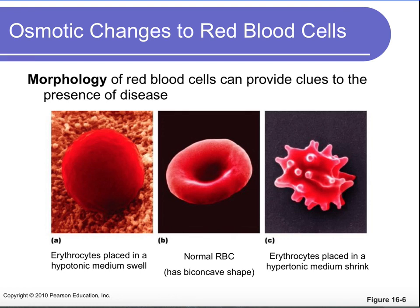Remember, water follows solutes. A spherical red blood cell tells us our blood has fewer solutes compared to the red blood cell — it's in a hypotonic medium — so water moved from hypo to hypertonic areas, causing the cell to swell. On the other hand, if the red blood cell looks shrunken, water has exited it because it's in a hypertonic medium and water rushed out into the more hypertonic solution.